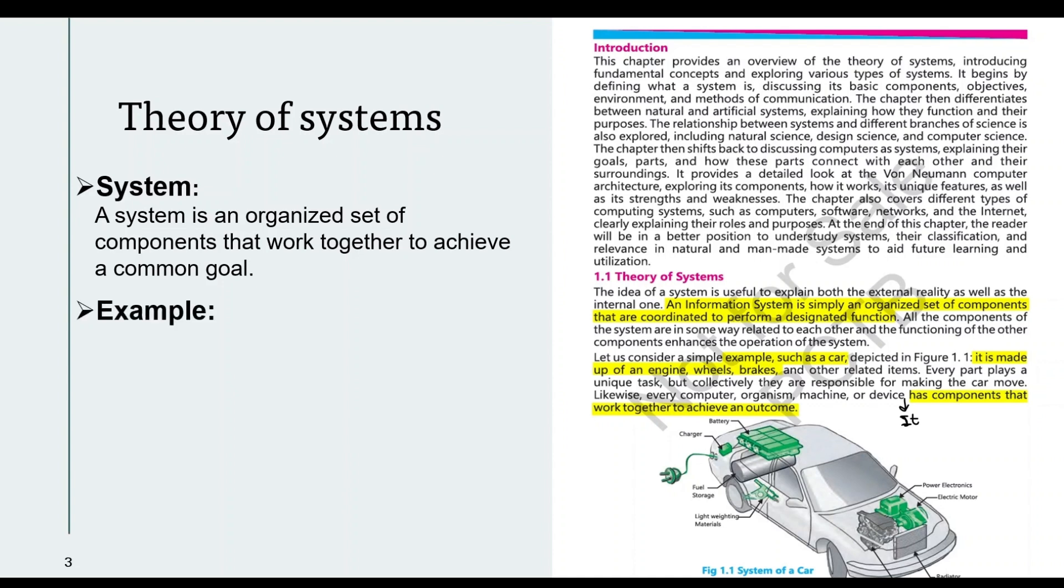For example, as mentioned in the book, a car is made up of engine, wheels, brakes - these are all its components. A car has battery, charger, brakes - all these perform their own tasks. But when they come together and we set them in an organized way, we get a proper system which is a car.